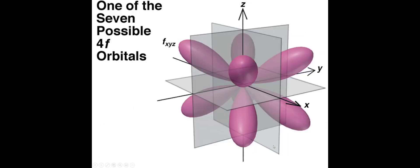The F orbitals get even more complicated, and we're not going to look at those in any depth. Here's what one of the possible F orbitals looks like. There are six more, and we're not going to worry about those. If you're curious, you can search F orbitals on the internet to see what they look like.